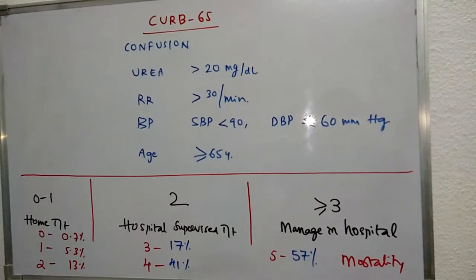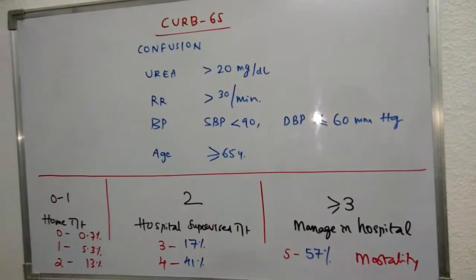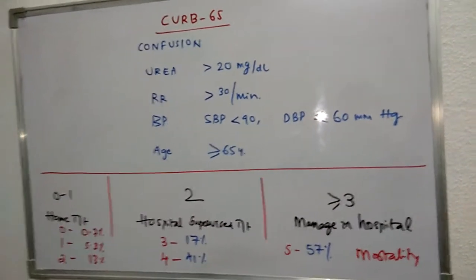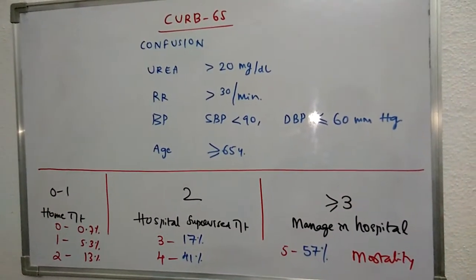Each criterion is given one point. If the score is 0 to 1, home-based treatment is sufficient.